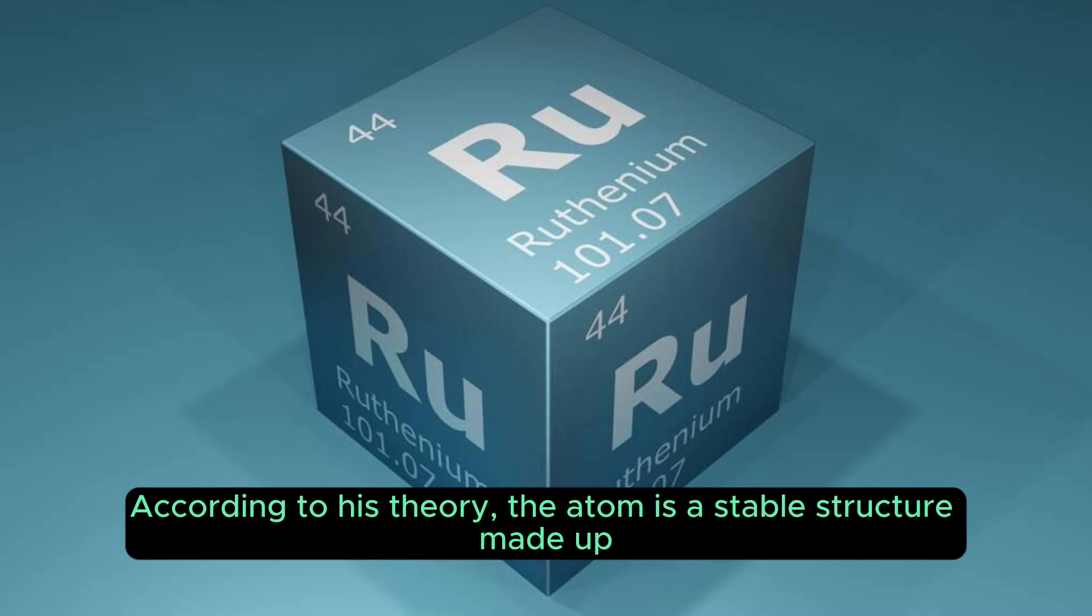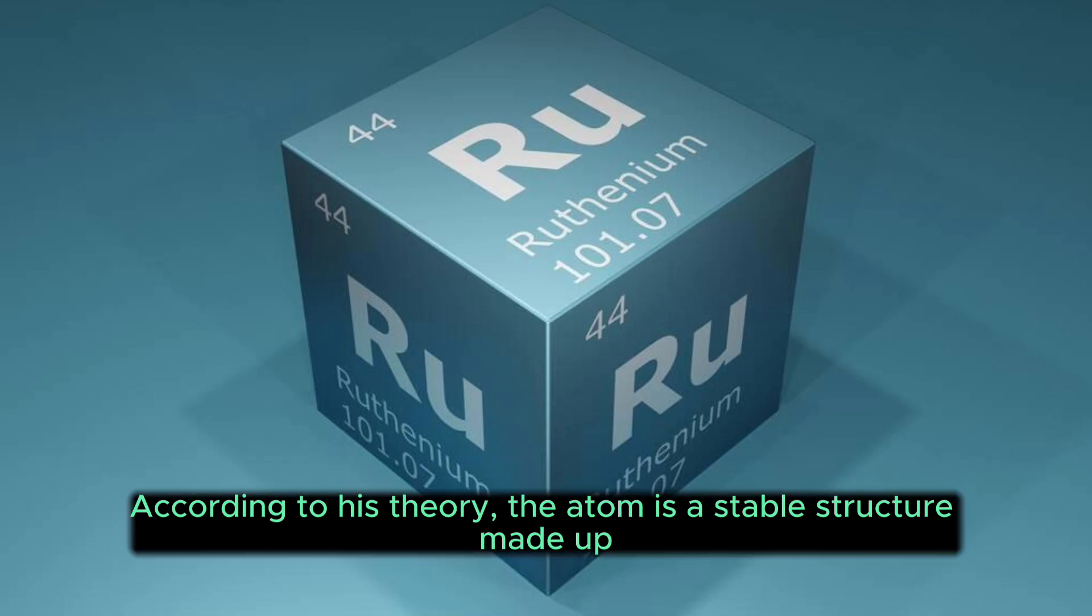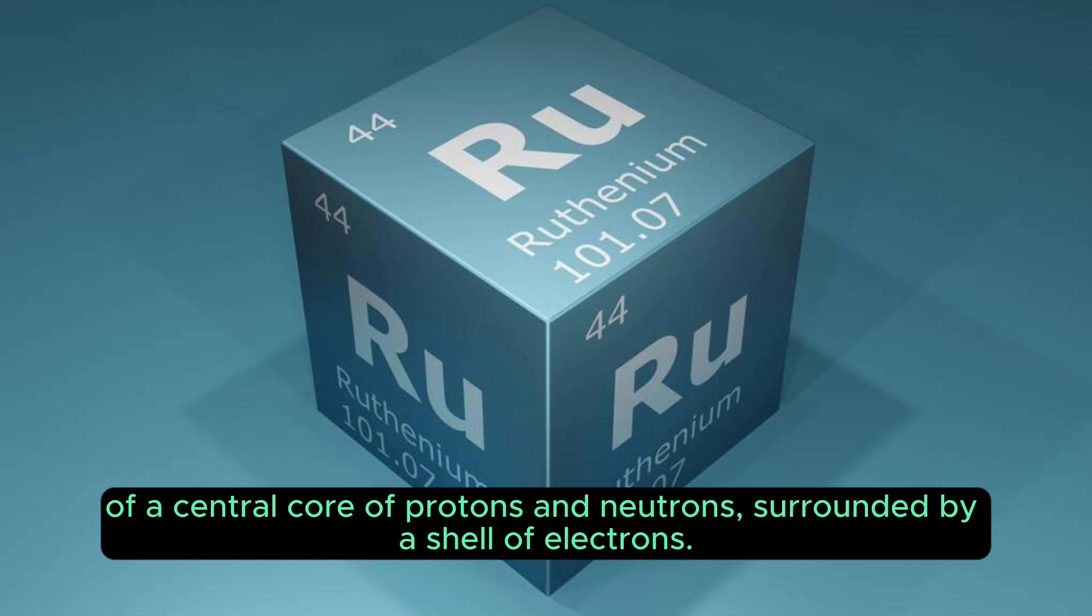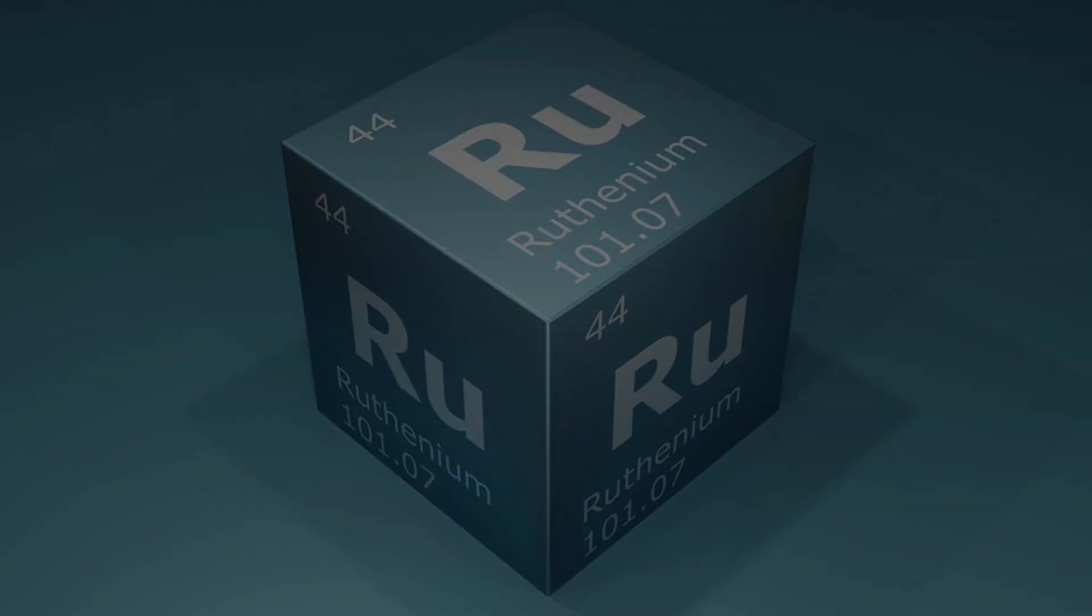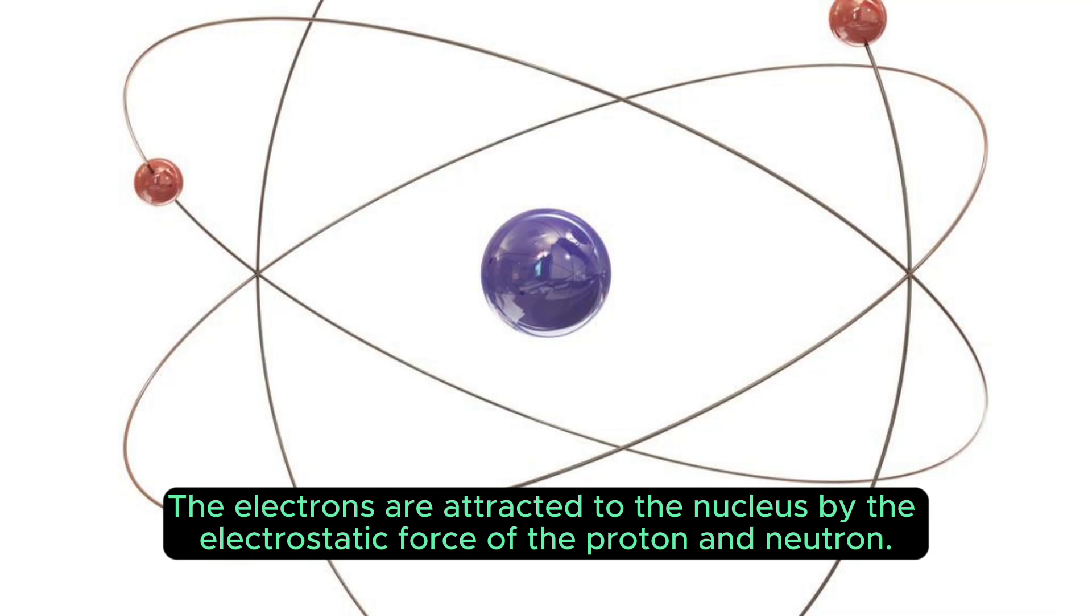According to his theory, the atom is a stable structure made up of a central core of protons and neutrons, surrounded by a shell of electrons. The electrons are attracted to the nucleus by the electrostatic force of the protons and neutrons.